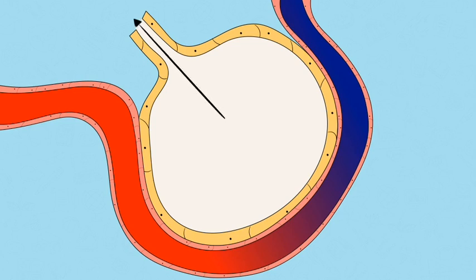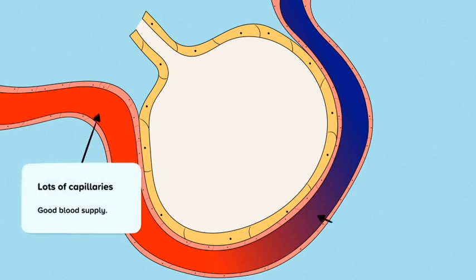There are a number of features that make gaseous exchange so efficient. Firstly, the alveoli have lots of capillaries surrounding them. This ensures there is a good blood supply and means oxygen is able to diffuse into the blood quickly. Participating in regular physical activity increases capillarization at the alveoli and makes gaseous exchange even more efficient.